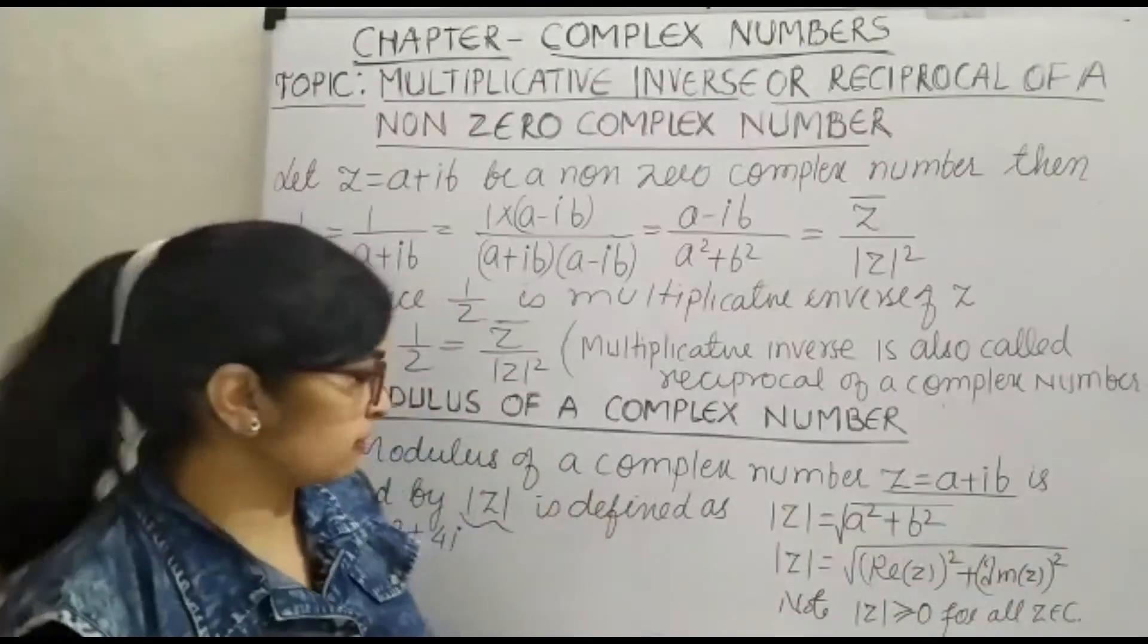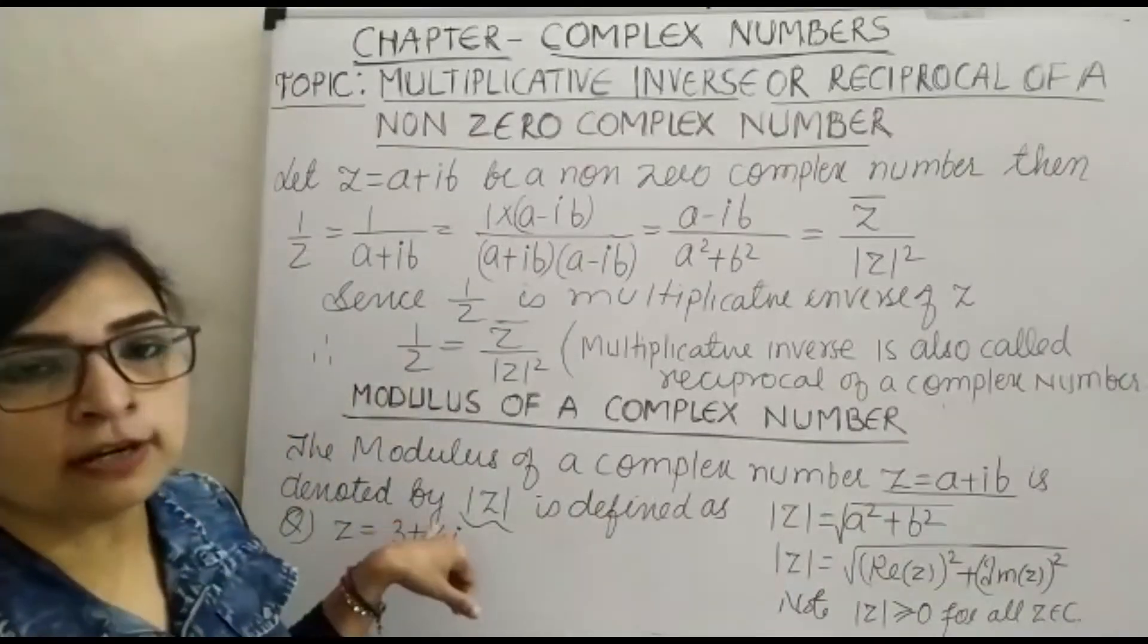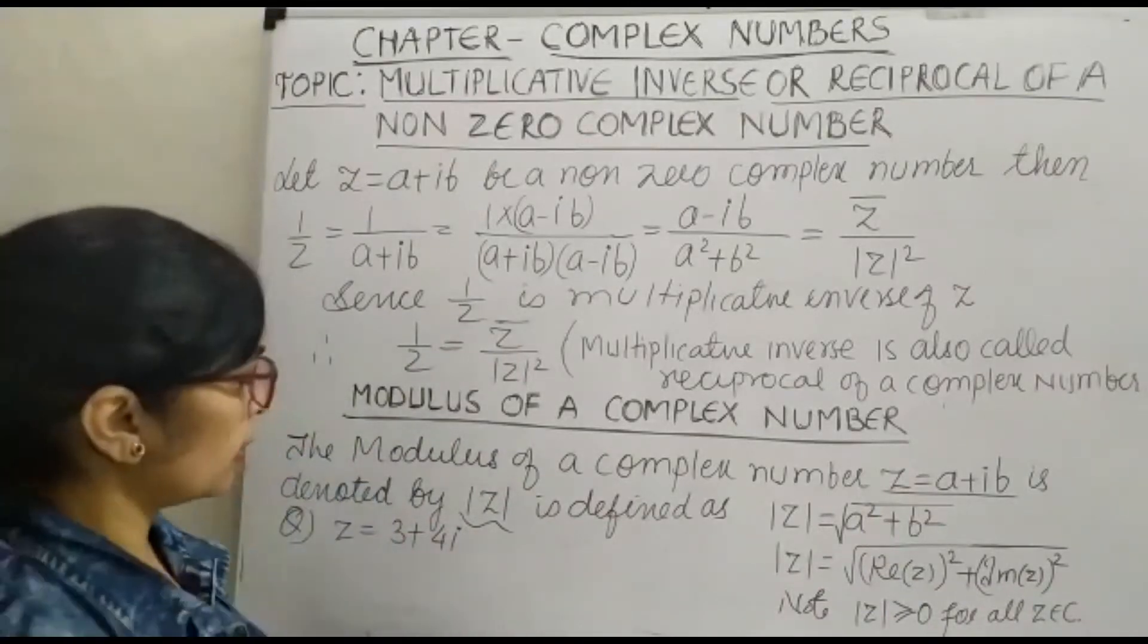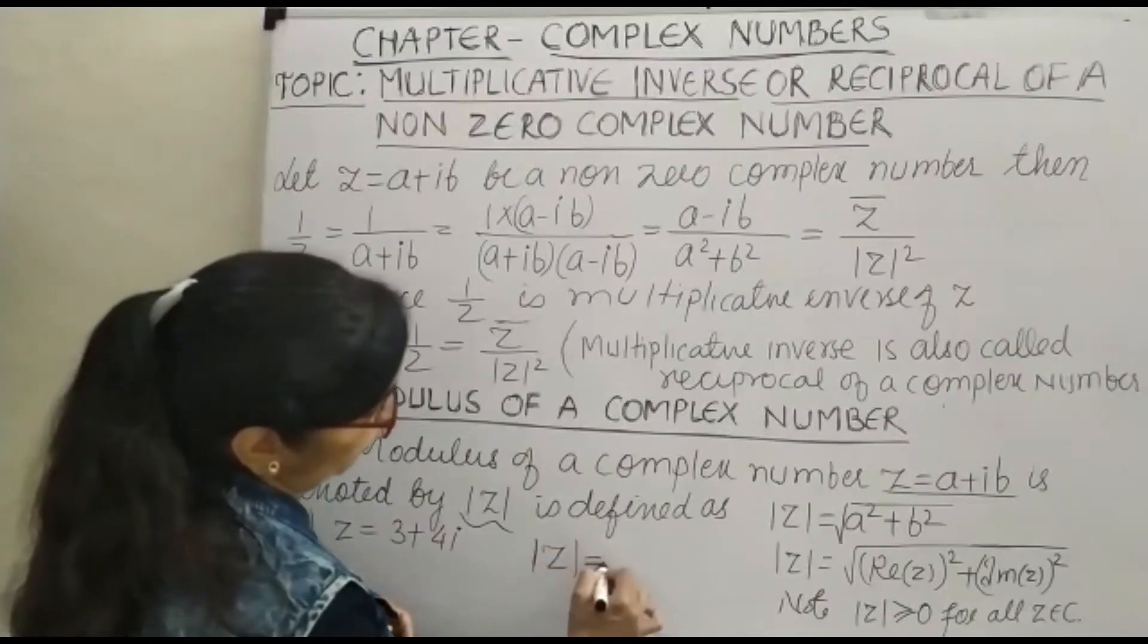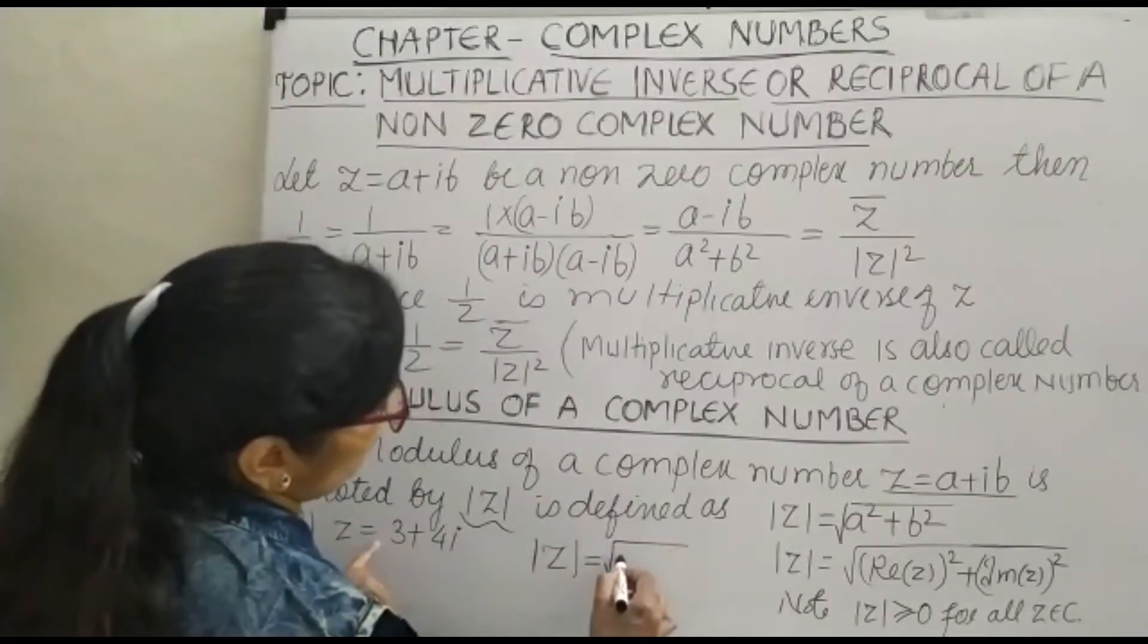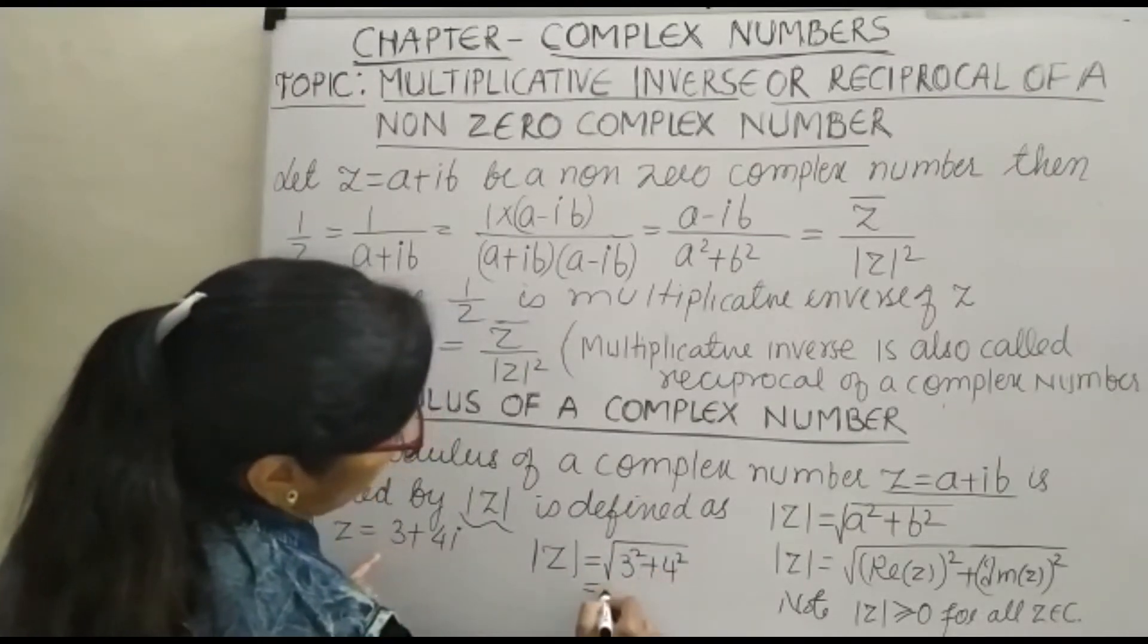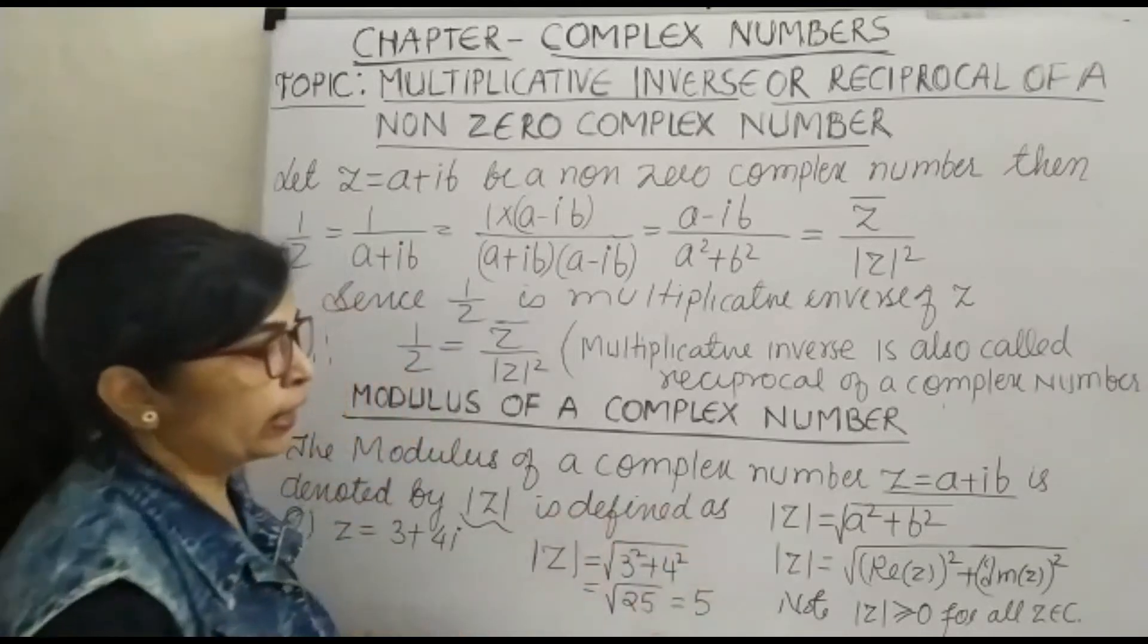Now we will do one question related to it. Our question is z equals 3 plus 4i. You have to take modulus of z equals under root 3 squared plus 4 squared, which equals under root 25, and this equals 5.